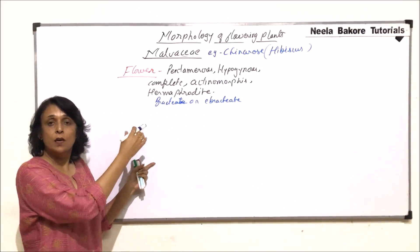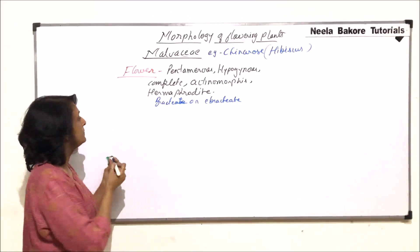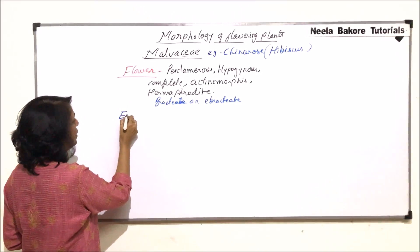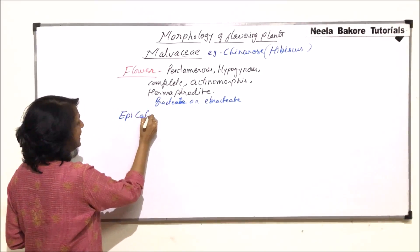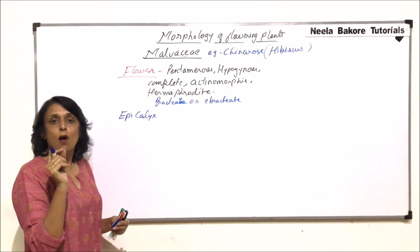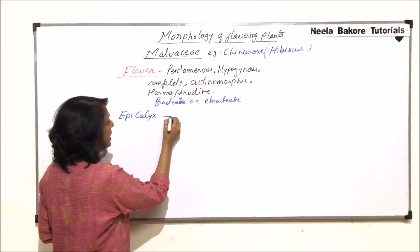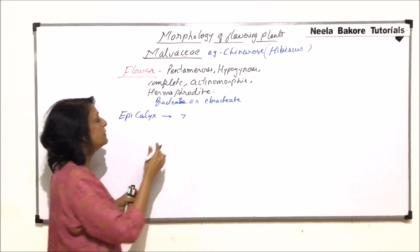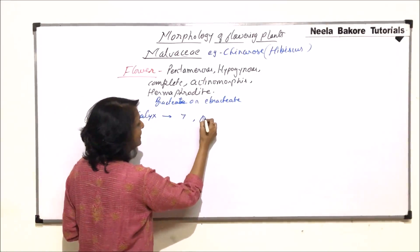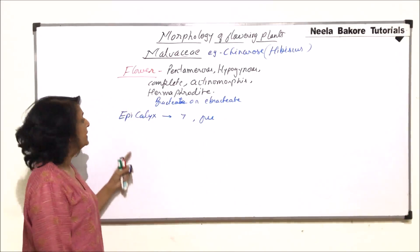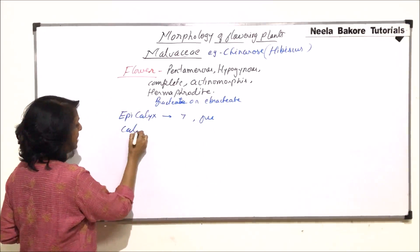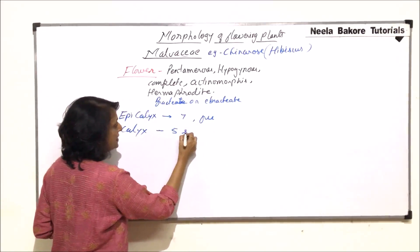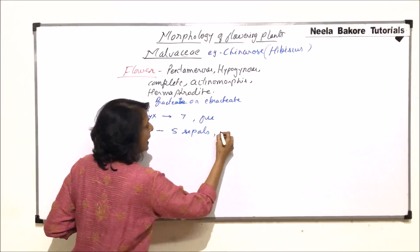After the flower description we will take up different whorls. In the case of the Malvaceae family, there is an extra whorl known as the epicalyx. There are small green structures and their number normally ranges from five to seven, but is typically seven, and they are free. The whorl inner to it is the calyx, which has five sepals.